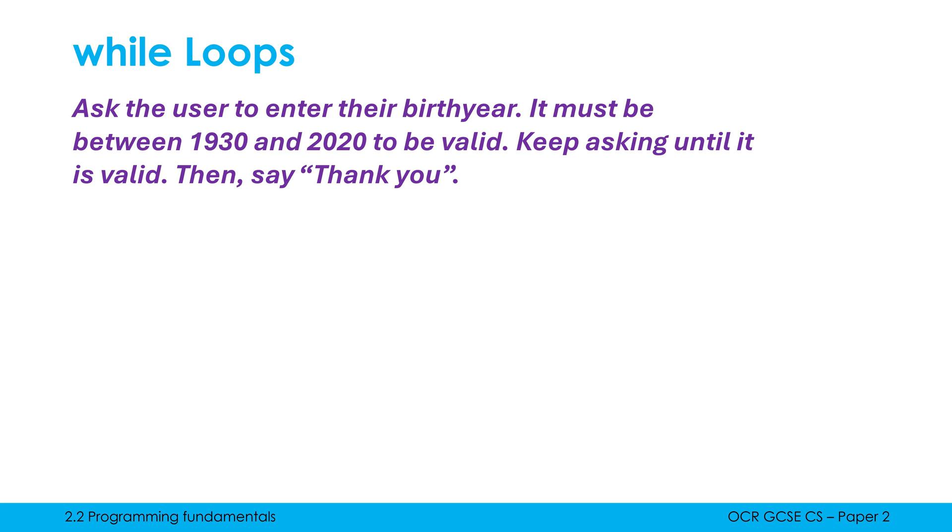Let's look at a couple of examples where we need to use a while loop. We can't use a for loop to solve this. So we're going to ask for you to enter their birth year. It must be between 1930 and 2020 to be valid. Keep asking until it is valid. Then say thank you. Any question which says something like keep asking or ask until, this is a clear sign you need to use condition control iteration, either a while loop or do until. Let's ask the user first of all to enter their birth year. This line goes above our while loop because we need to use birth year in our condition.